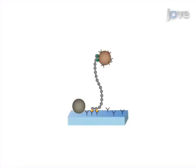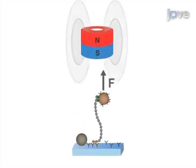In the first assay, called Freely Orbiting Magnetic Tweezers, or FOMPT, a single functionalized DNA molecule is tethered between a magnetic bead and a glass surface, while a cylindrically shaped magnet exerts a force, stretching the DNA.